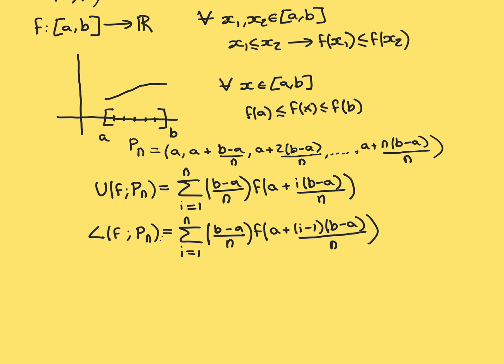Because it's monotonically increasing, this is really simple. The function has a minimum. And that minimum is at the lower bound of the subinterval rather than the upper bound this time. So the maximum is at the upper bound and the minimum is at the lower bound.